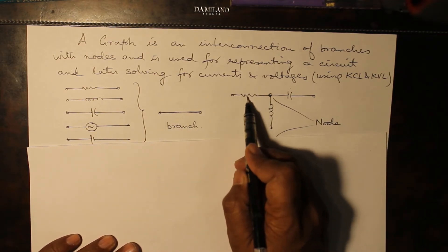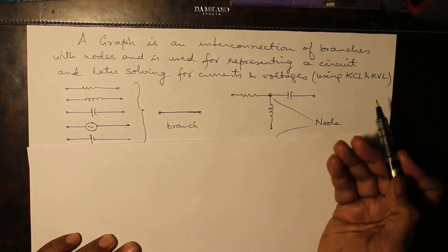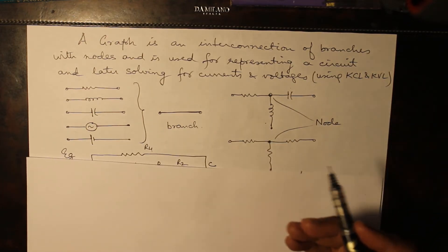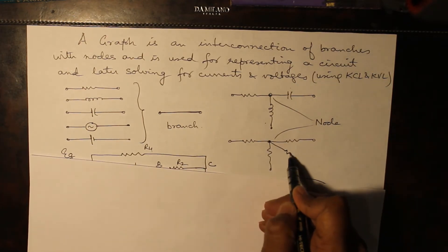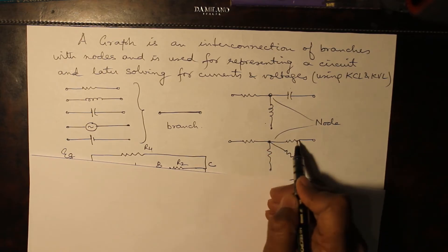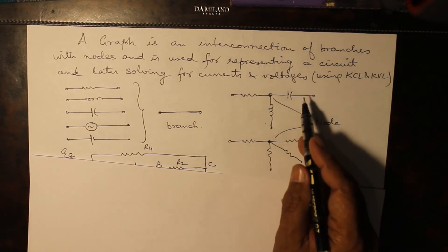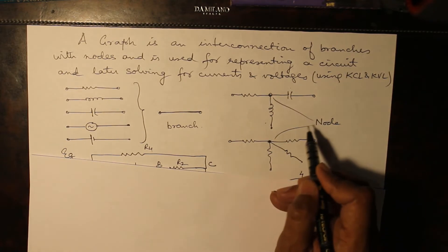Any point where three or more than three elements are connected - they may be similar elements, they may be dissimilar elements - wherever they are connected is known as a node.